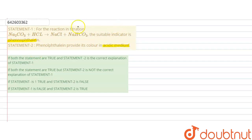Talking about the first statement, for the reaction or titration Na2CO3 + HCl, it forms NaCl + NaHCO3. The suitable indicator is phenolphthalein. Phenolphthalein gives its indication when NaHCO3 is formed, and it works in basic medium.